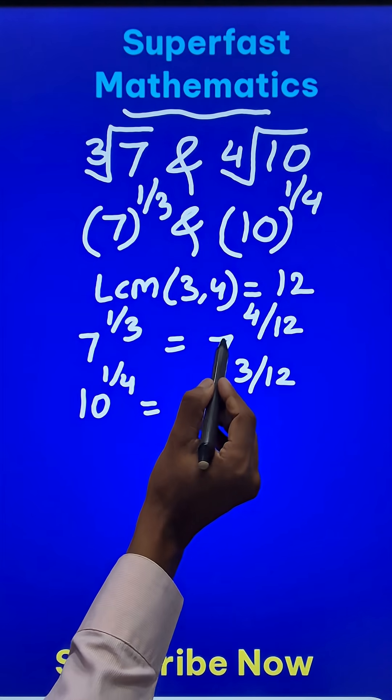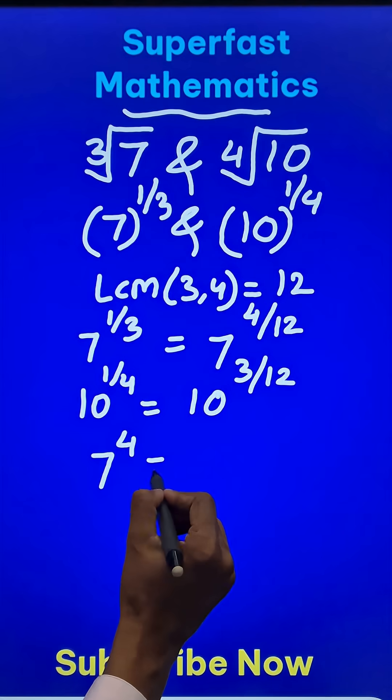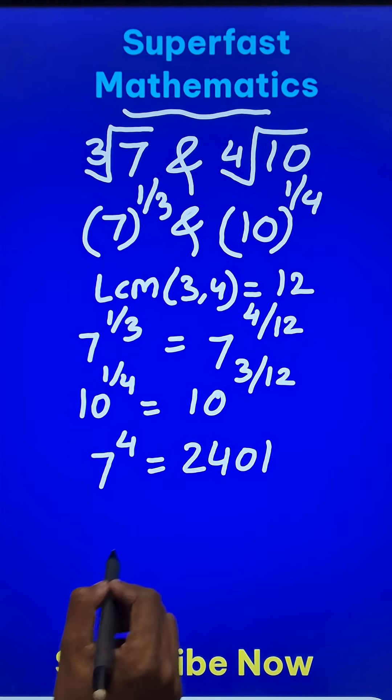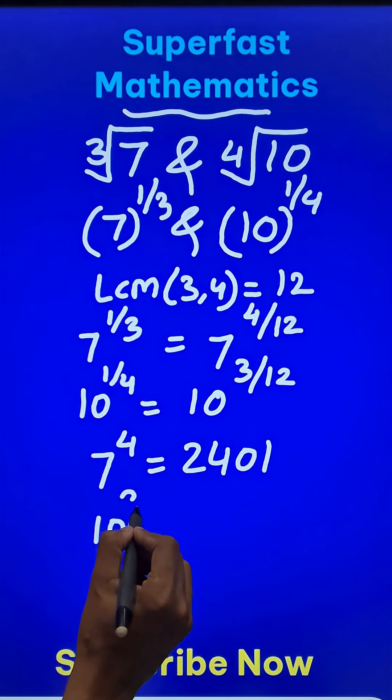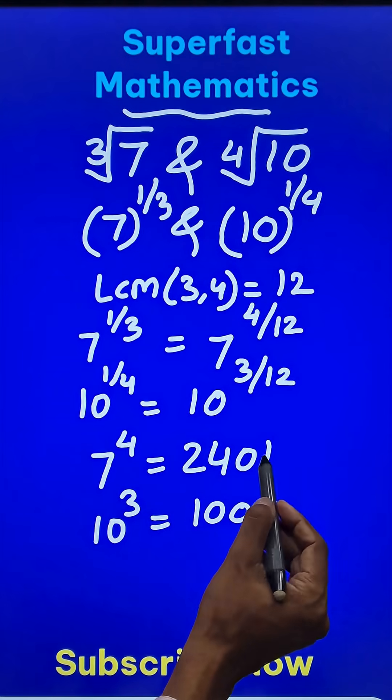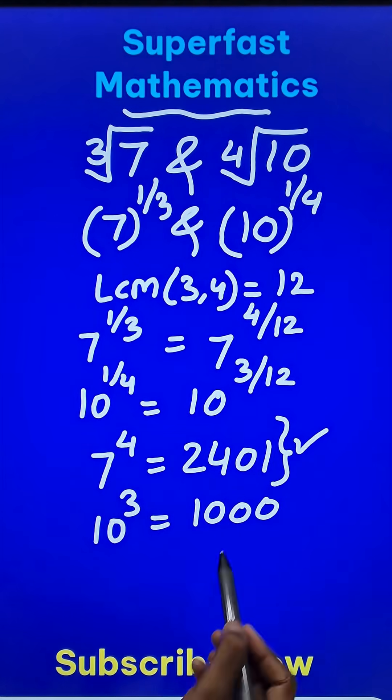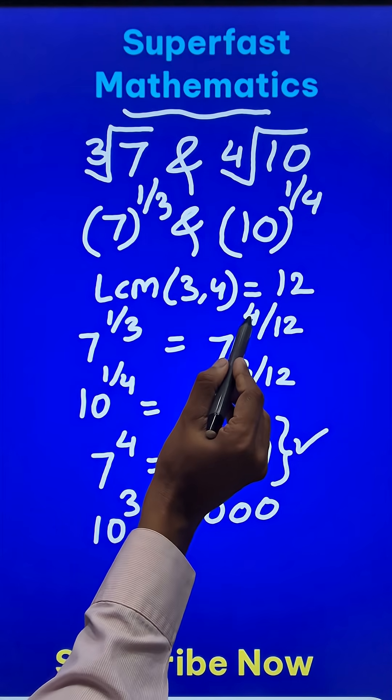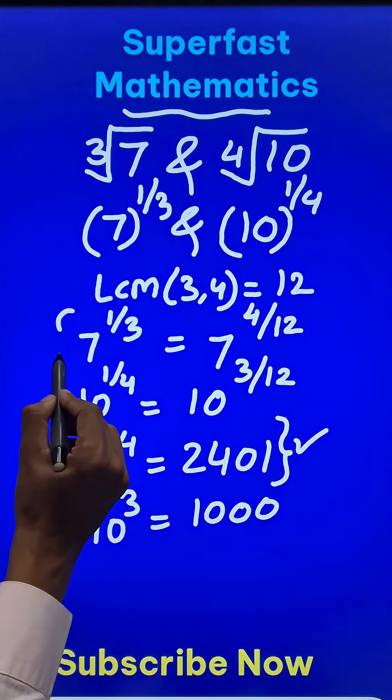Now all you need to do is compare 7 raised to power 4, which is 2,401, and 10 raised to power 3, which is 1,000. You will have your answer because 2,401 is greater, which is obtained from 7 raised to power 4, and this is obtained from 7 raised to power 1/3.